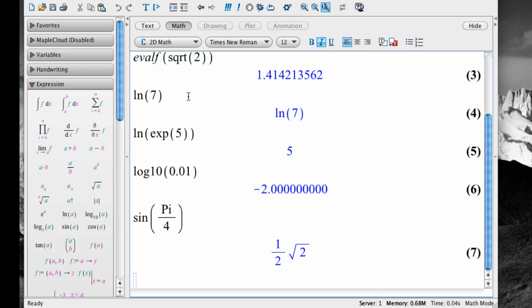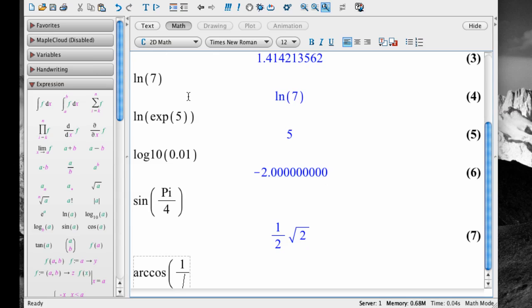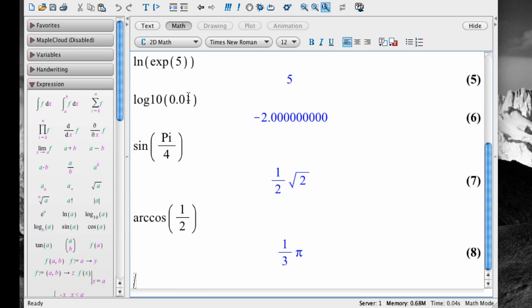For inverse trig functions, we use the arc notation rather than a negative 1 exponent. For example, to find the inverse cosine of 1 half, type arccos, open parenthesis, 1, slash 2, navigate out of the denominator with the right arrow key, and then close parenthesis and hit enter.